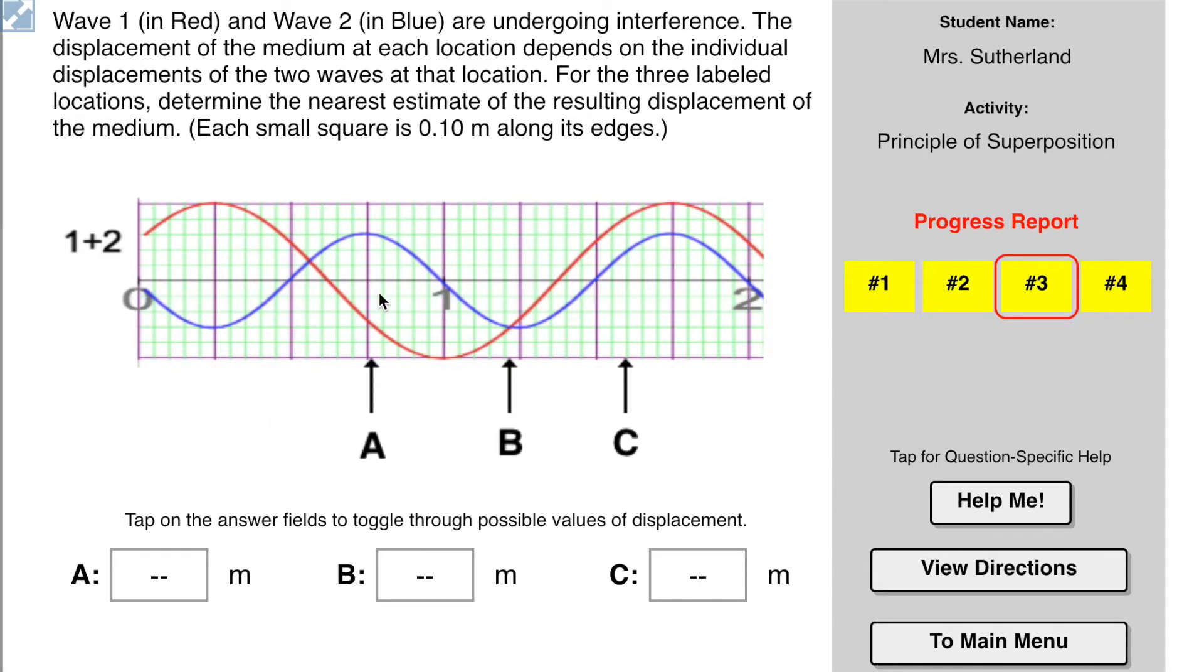So for A, we have negative 0.1, negative 0.2, almost negative 0.3. And for the blue wave, we have positive 0.1, positive 0.2, positive 0.3. So we have to take positive 0.3 minus 0.1, 2, minus 0.25. So that would give us a positive 0.5, I think, 0.05. Let's try that one. Because it's basically 3 minus 2 and a half.